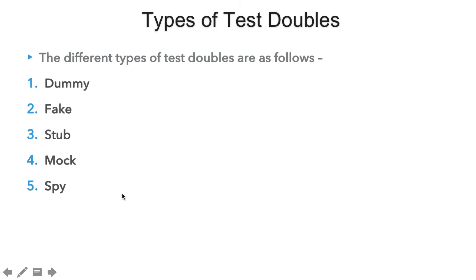In our upcoming lecture, we will see how we can create these five types of test doubles, which are basically replacements of our external services. And then later on, we'll see how the Mockito framework helps us in creating these five test doubles and also helping in our unit testing. I hope you liked this video. Thanks, have a nice day.